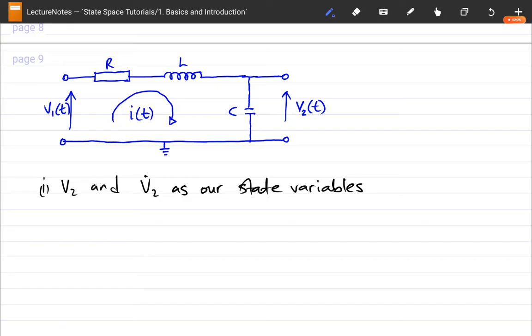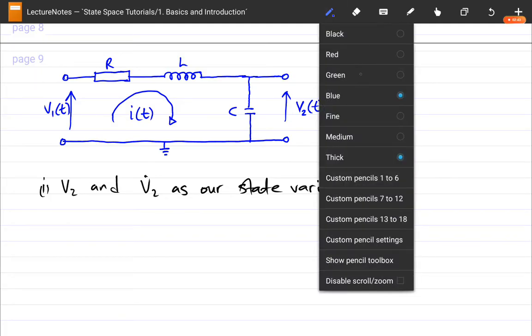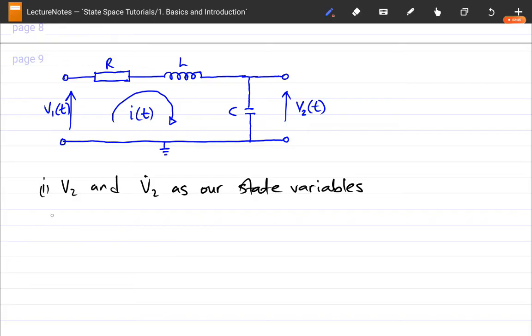So we're going to have two state variables and it is up to you to choose which you want to be your state variables. But to simplify this question, I have selected V2 and V2 dot as our state variables. Remember, the state variables are proceeding derivatives, incrementing derivatives. That's why it's V2 and V2 dot. V2 dot means the derivative of V2. So without wasting time, let's start off with the steps.